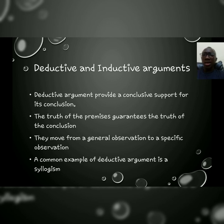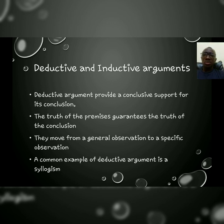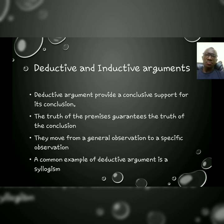So, in a deductive argument, there is no way the premises will be true and the conclusion will be false. Also, with deductive argument, they move or start from a general observation to a specific observation. And one common example of deductive argument is a syllogism — a three-lined argument with exactly two premises and a conclusion.